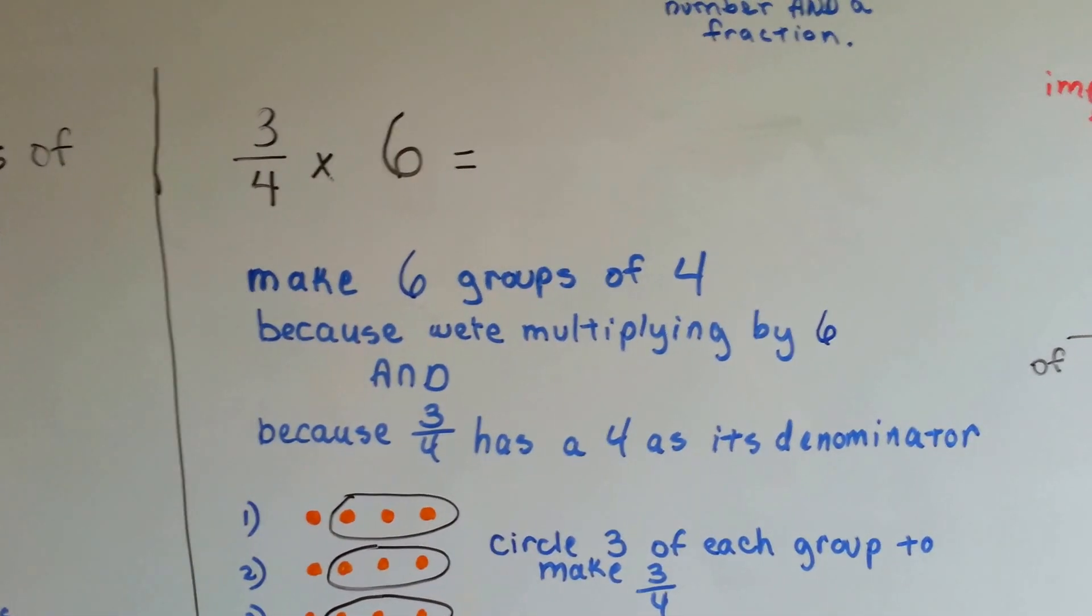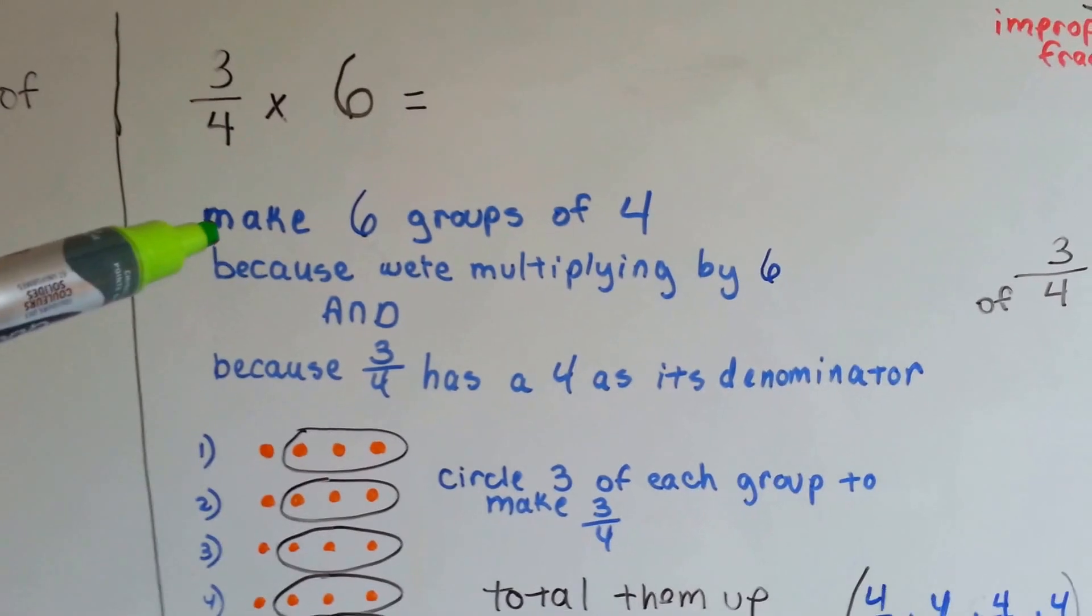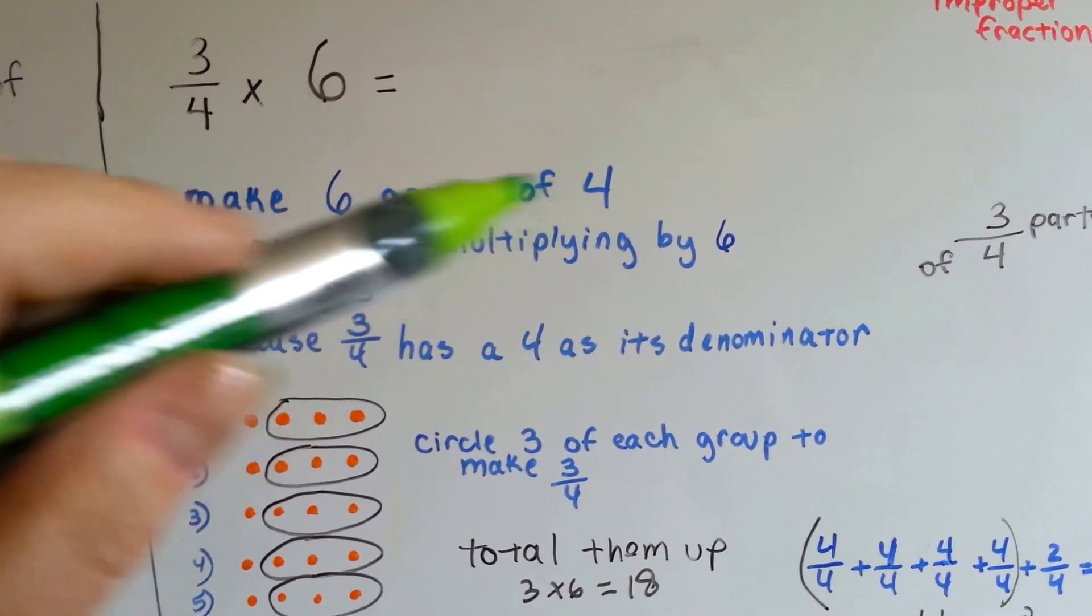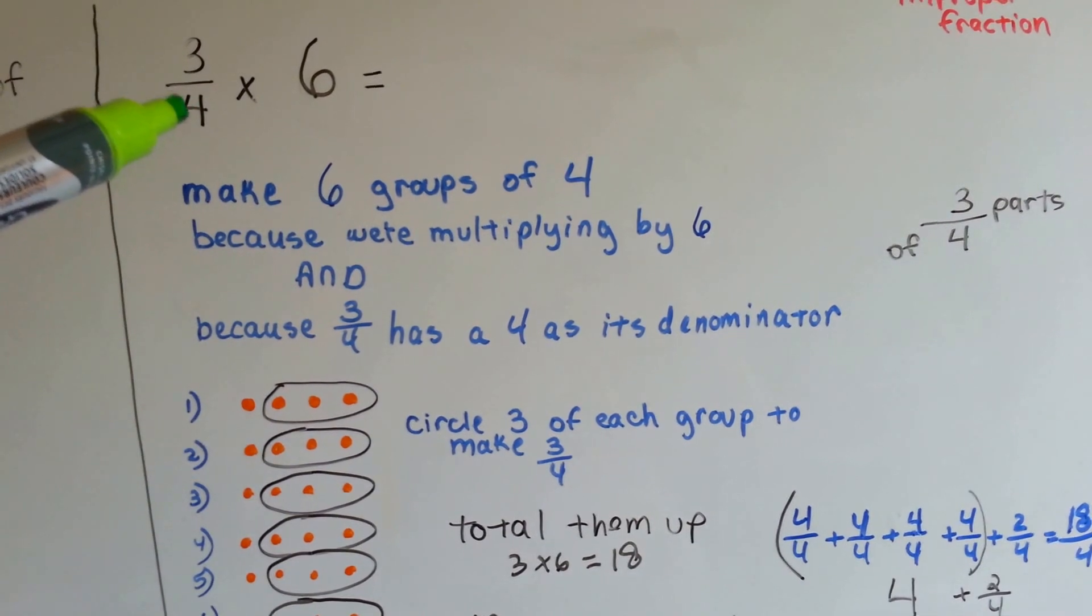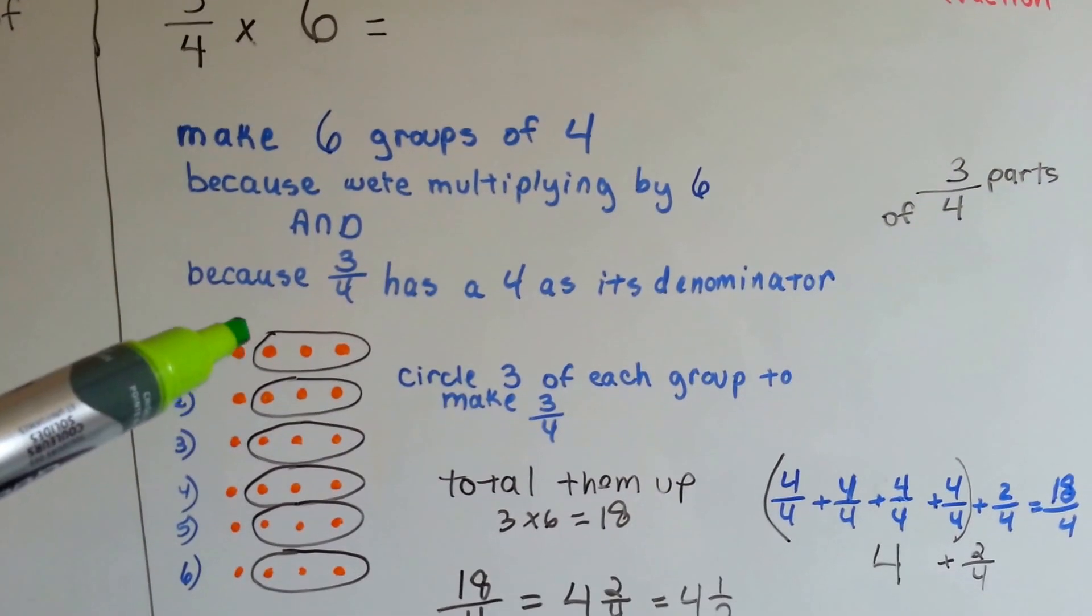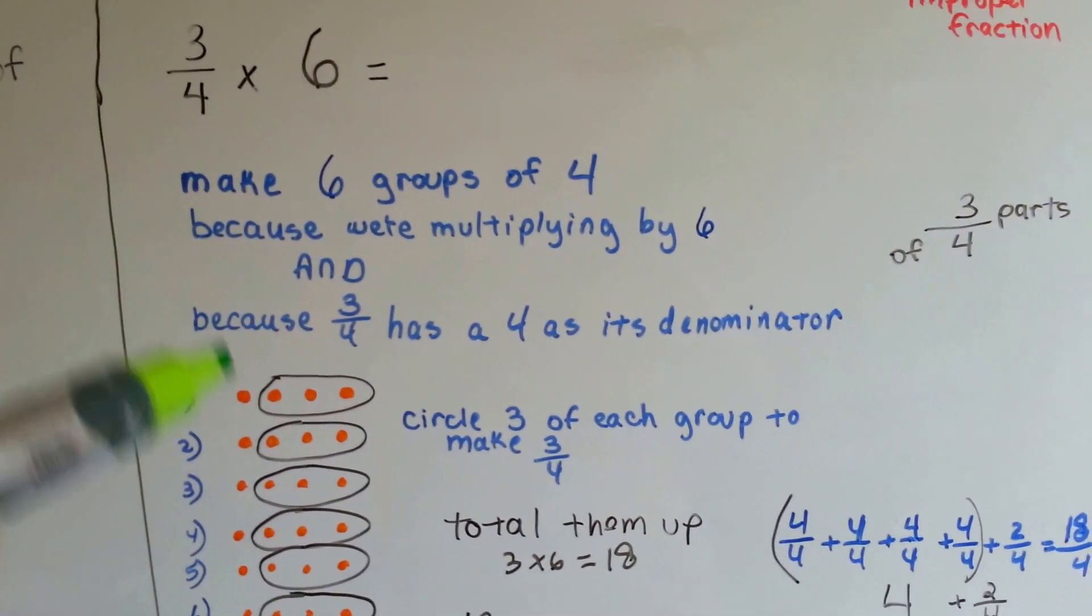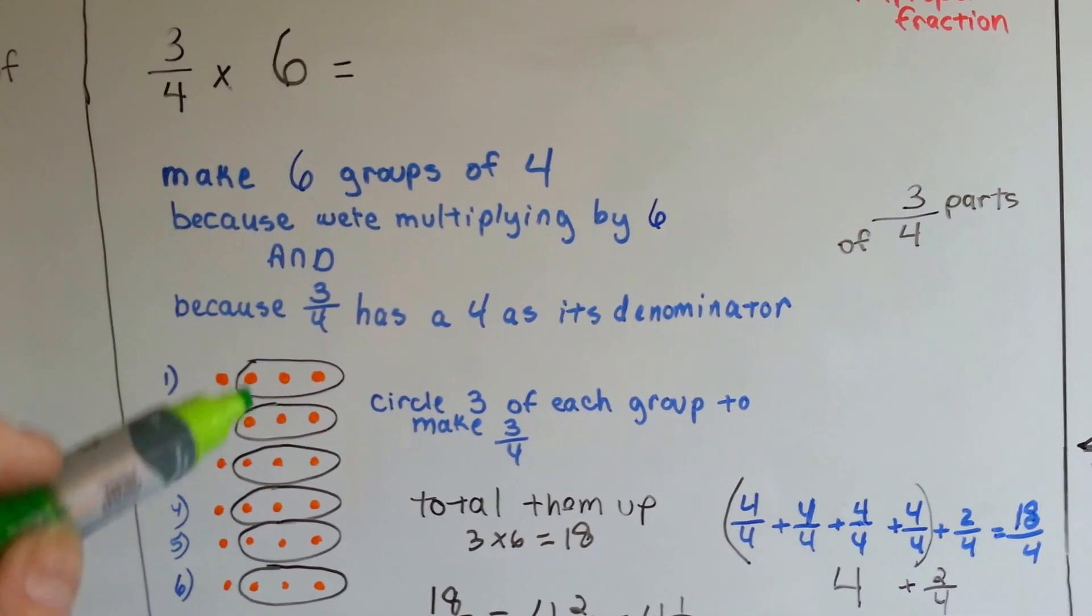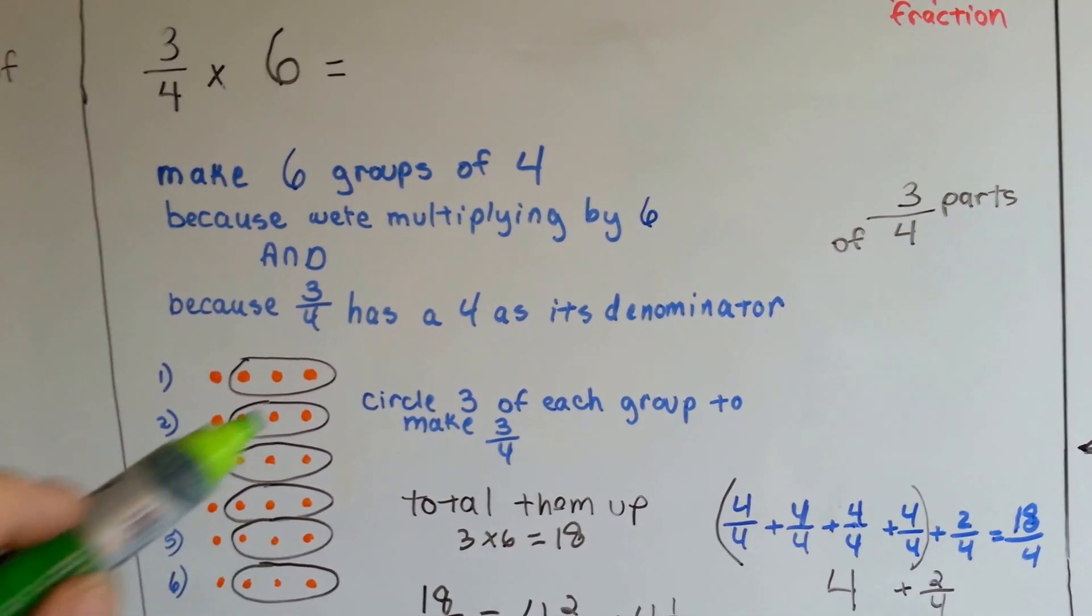If you saw three-fourths times 6, what we could do is make 6 groups of 4. We know they're going to be groups of 4 because the denominator is 4. And we need 6 of them. So what we do, because it's easier to do it this way, just make groups of 4 because the denominator is 4. So I made 6 times, I made 4 dots.